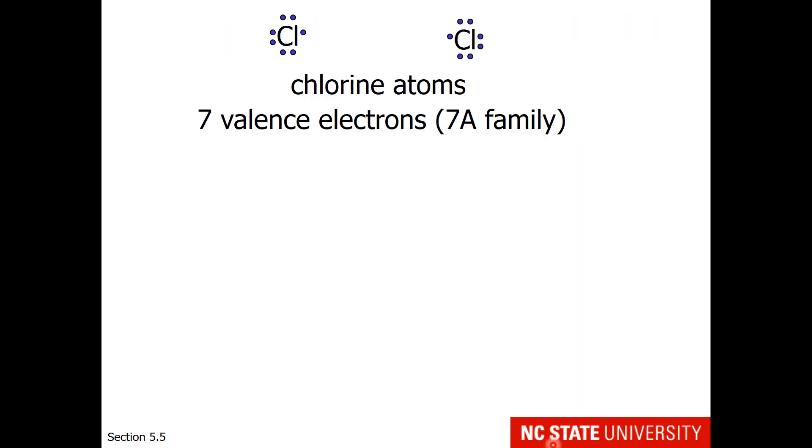We'll start with a very simple example: a compound between two chlorine atoms. Each chlorine atom has seven valence electrons because they are in Group 7A. If I wanted to make a compound with two chlorine atoms, I would draw the Lewis structure like this.